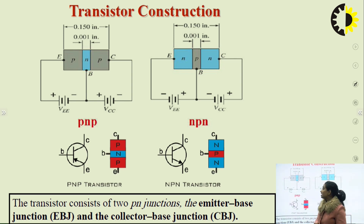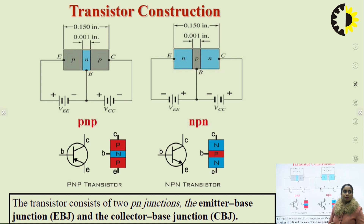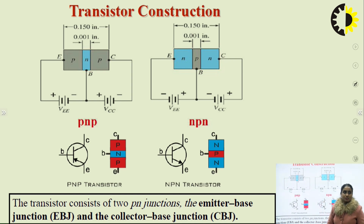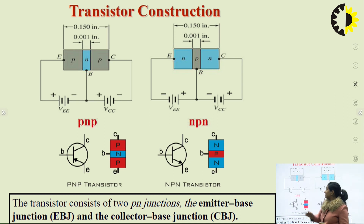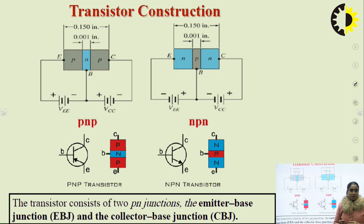For an NPN configuration, the emitter-base junction is forward biased when connected to the positive terminal of the battery. The base-collector junction is reverse biased when the collector is connected to the negative terminal of the external supply. With these potentials applied — emitter, base, and collector — in active region, when emitter-base is forward biased and collector-base is reverse biased, we can get amplification.